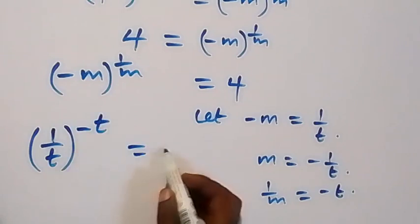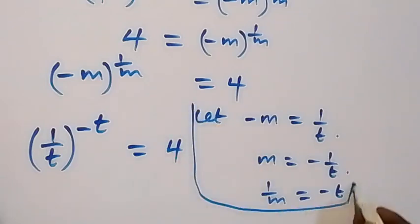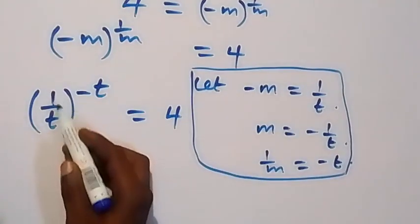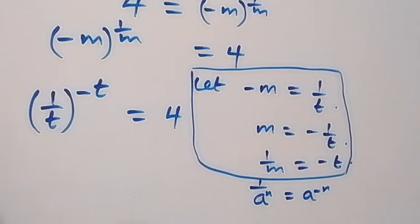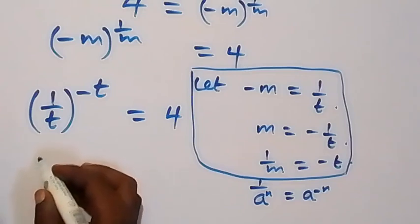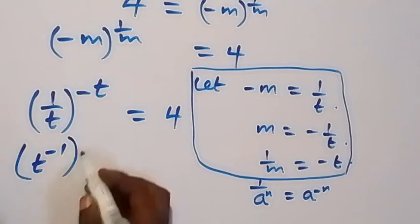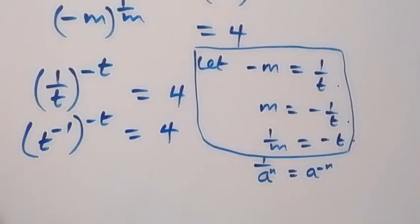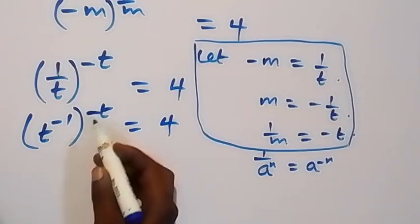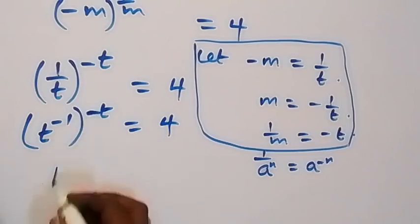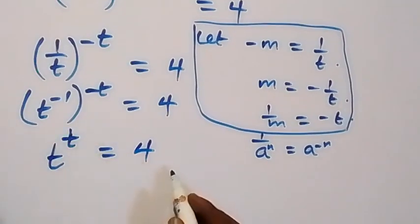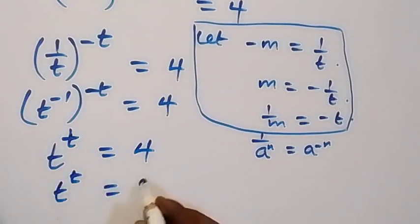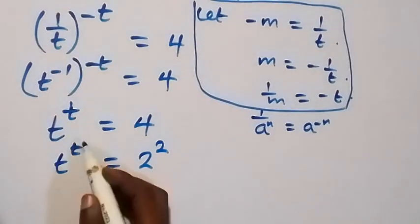Then when we substitute, we have minus m written as 1 over t, raised to power minus t, which is equal to 4. Then by the law of indices, 1 over t raised to power something gives t raised to power minus that. The two negatives multiply to give plus, so we have t raised to power t, now equals to 4.